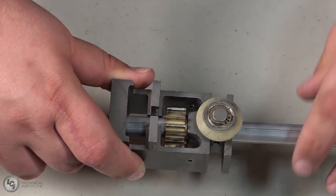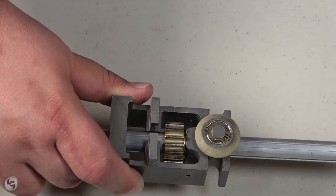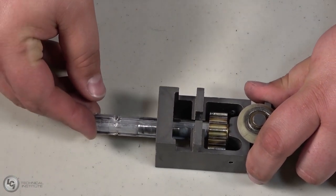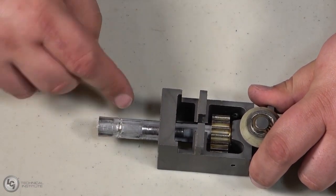Again, remember to make sure that the staked end of the torque shaft prevents it from going through the upper spur gear. Then repeat this process for the bottom bearing blocks.